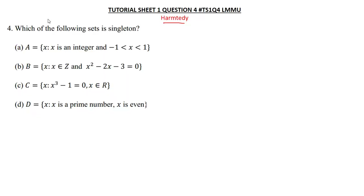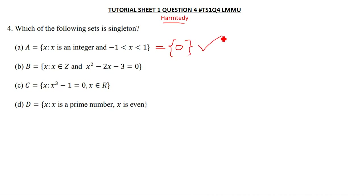The first question says A is equal to {x : x is an integer and -1 < x < 1}. Which integer lies strictly between negative one and one? That is just zero. So zero is the only integer between negative one and one, meaning this is a singleton set because it only contains one element.